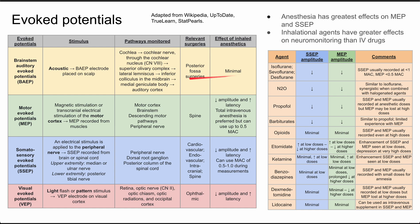Motor evoked potentials have a stimulus that starts as a magnetic stimulation or transcranial electrical stimulation of the motor cortex. The evoked potential is then recorded from the muscles. The pathway monitored starts at the motor cortex, to the brainstem, to the descending motor pathways, to the peripheral nerves, down to where you're recording in the muscles. Relevant surgeries are spinal surgeries. Inhaled anesthetics tend to decrease the amplitude and increase the latency. Total intravenous anesthesia is the preferred route, but you can use inhaled anesthetics up to 0.5 MAC.